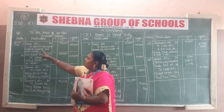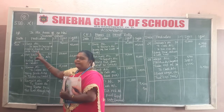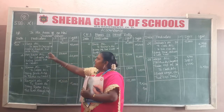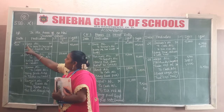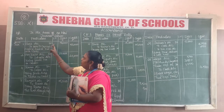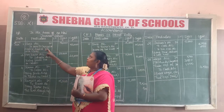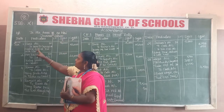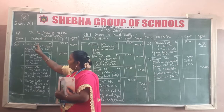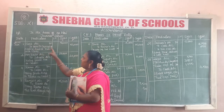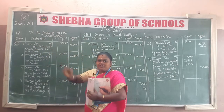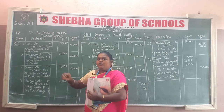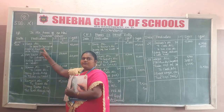What is the first transaction? Start a business with cash. The entry is: Cash account debit to Harry's capital account. Capital represents the giver — Harry is the giver here, so the capital account is credited.